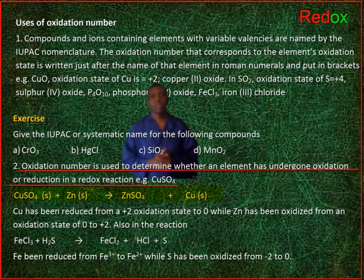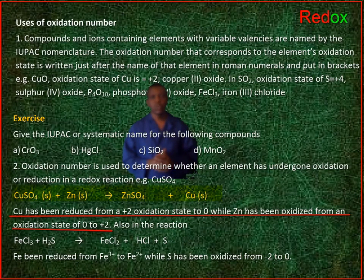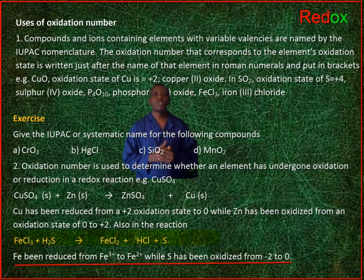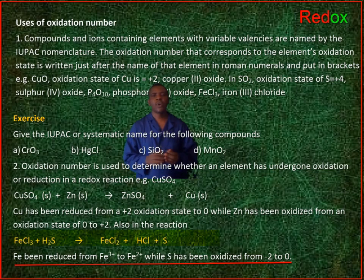Example: copper sulfate reacting with zinc to give zinc sulfate and copper. Copper has been reduced from a plus 2 oxidation state to zero, while zinc has been oxidized from an oxidation state of zero to plus 2. Also, in the reaction of iron(III) chloride with hydrogen sulfide to give iron(II) chloride, hydrogen chloride and sulfur, iron has been reduced from plus 3 to plus 2, while sulfur has been oxidized from minus 2 to zero.